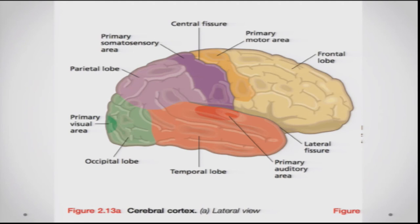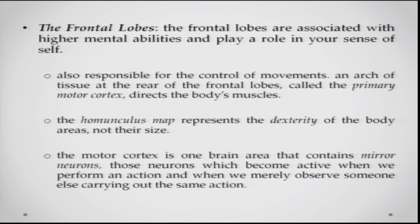Within the frontal lobes is the primary somatosensory cortex and the homunculus map, which represents bodily dexterity across different body areas. The motor cortex also contains a special set of neurons called mirror neurons — neurons that become active when you perform a particular action or even when you observe someone else performing that action. Mirror neurons help you mimic and learn actions you are observing, and are thought important for language, learning, and social behavior.